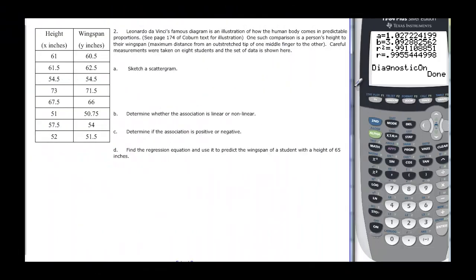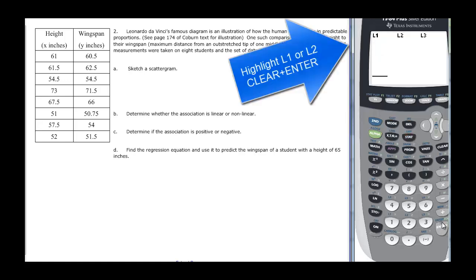Let's do our 2nd example here. Leonardo da Vinci's famous diagram with the man with all the lines on it. The illustration of the human body shows proportions, and that's what we're going to look at. We're going to look at the wingspan, the comparison of a person's height to their wingspan. I'm going to show you how to clear it out, so go to Stat, Edit, press Enter.